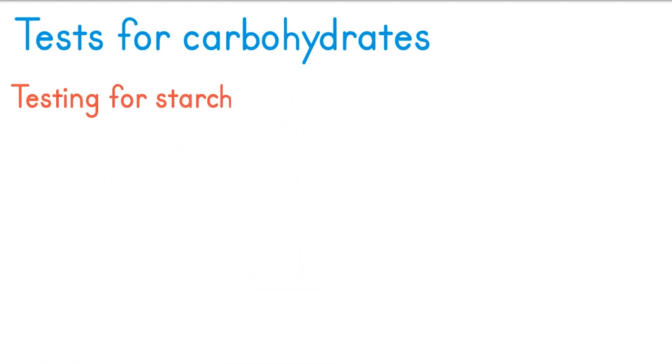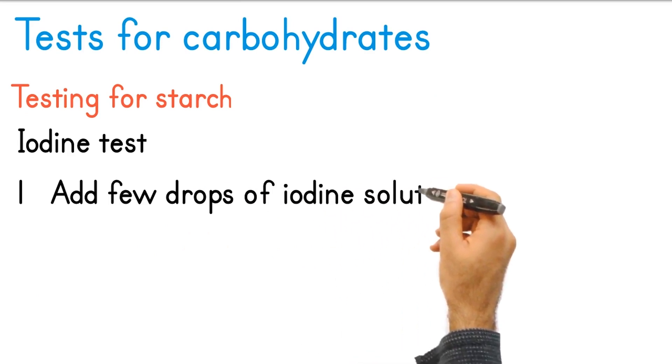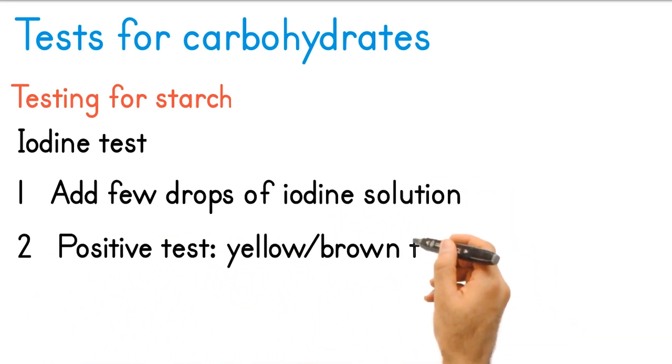Testing for starch, the iodine test. First, add a few drops of iodine solution. A positive test is seen when the solution changes from a yellow, brown color to blue, black.